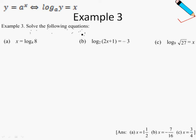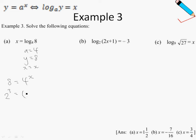To solve the following equations, the easiest way is to make use of the index form. In part a, I'm going to convert from the logarithmic form to the index form. My a is 4, my y is 8, and my x is x. So converting: 8 equals 4 to the power of x. Applying laws of indices: 8 is 2 to the power of 3, and 4 is 2 squared. Simplifying: 3 equals 2x, so x equals 3 divided by 2, which is 1.5.